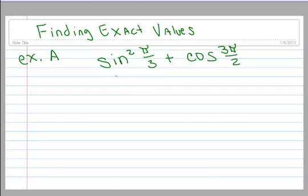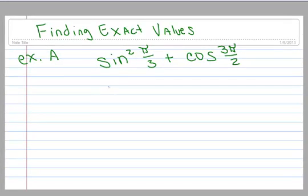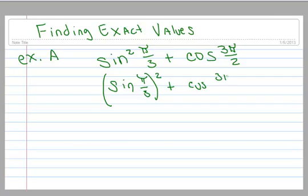You just start by substituting in things that you know, and recall that this really means the sine of pi over 3 squared. So the sine of pi over 3 is square root of 3 over 2, and I want to square that. And I want to add the cosine of 3 pi over 2, which is 0.